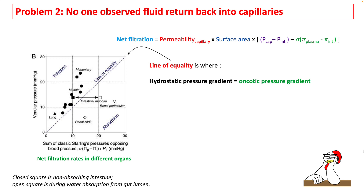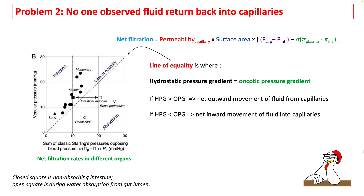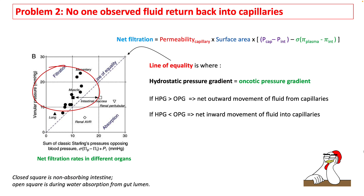Second, there is no observed fluid returning back into the capillaries. We know that the driving pressure depends upon the difference in hydrostatic and oncotic pressure gradient. This graph shows all the net filtration studies in different organs. The line of equality denotes where the hydrostatic pressure gradient equals the oncotic pressure gradient. In almost all organs, the movement is towards filtration and not towards absorption.